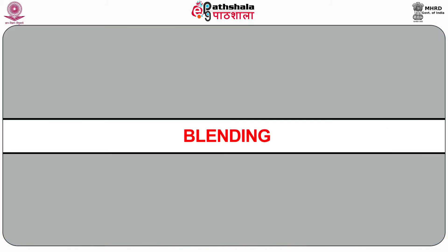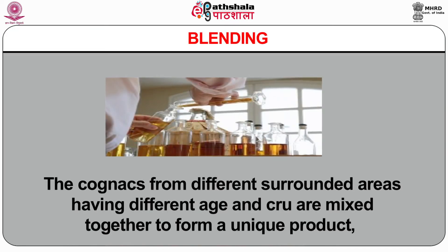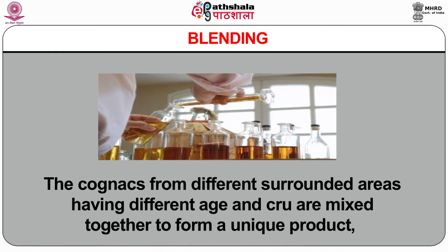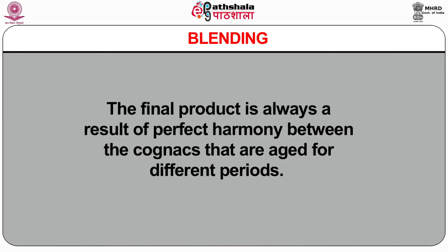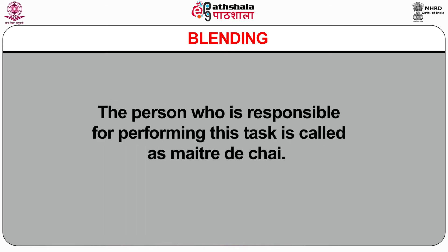The next and very important step is blending. Cognacs from different surrounding areas having different age and crus are mixed together to form a unique product. The final product is always a result of perfect harmony between the Cognacs aged for different periods. The person responsible for performing this task is called the Maître de Chai, whose job is to blend and check for consistency in colour, bouquet, taste, and quality of the end product. After blending, the Cognacs are allowed to rest for a period of time so that all the characters from different blends marry together to form the best Cognac.